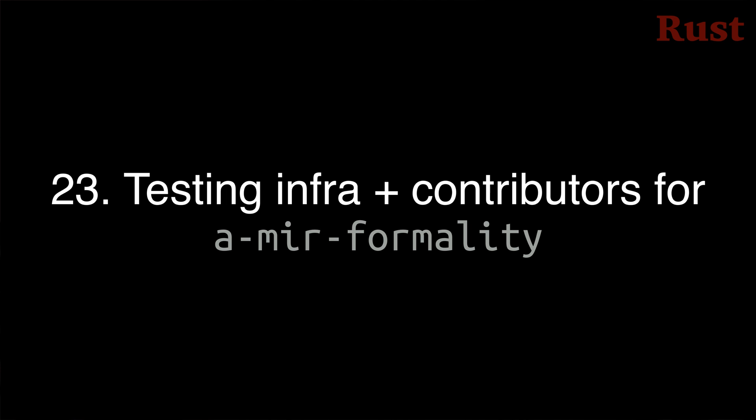Project 22 is to move rustc's support for a parallel frontend closer to stability by resolving internal compiler errors and deadlock issues, completing the test suite for multi-threaded scenarios, and integrating a parallel frontend into bootstrap. This fits into the larger goal of improving rustc build times by 20%. Project 23 is for Niko Matsakis to set up testing infrastructure for his a-mir-formality project and get two other members of the type team contributing. A-mir-formality is intended to serve as the official model of how the Rust type system works.